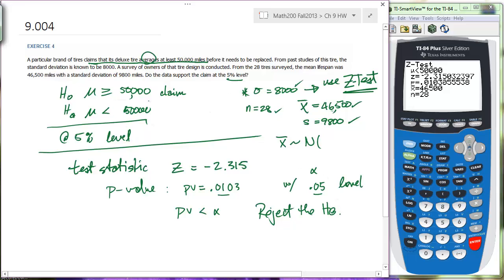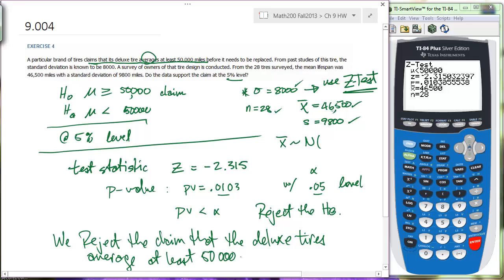So the fact that we're rejecting the null hypothesis is basically saying that we're going to reject our claim. So we reject the claim that the deluxe tires average at least 50,000 miles before it needs to be replaced.